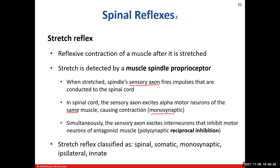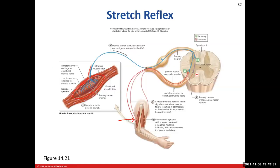We call that reciprocal inhibition — a very important concept. We don't want to work against our reflex, so we shut off the antagonistic muscle group so it doesn't interfere with the triceps brachii action. That's the stretch reflex.